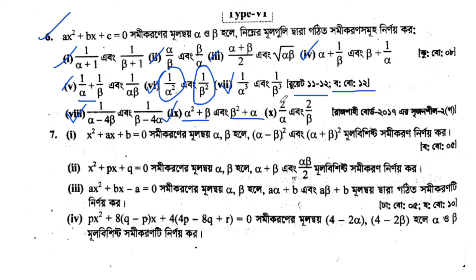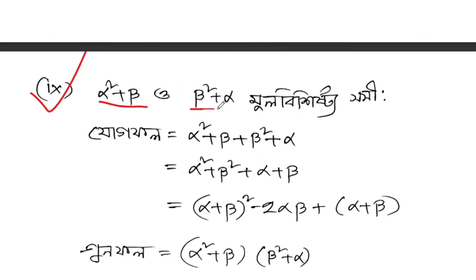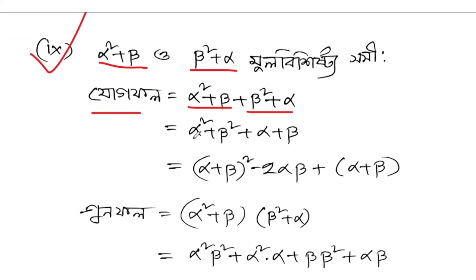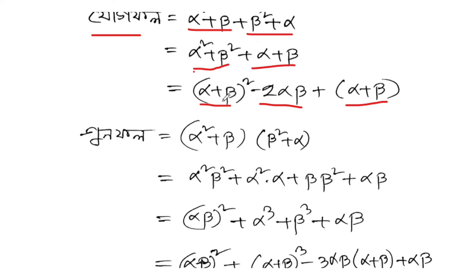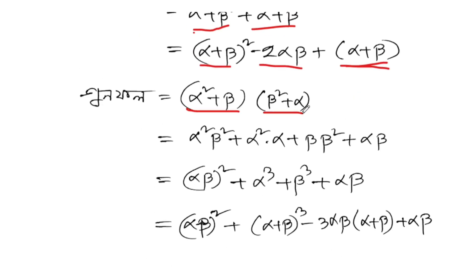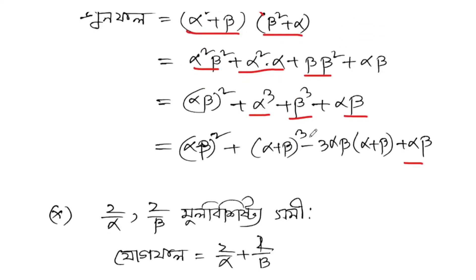The problem: alpha squared beta and beta squared alpha — find the equation. The product is alpha squared beta times beta squared alpha equals alpha cubed beta cubed equals (alpha beta) cubed. The sum is alpha squared beta plus beta squared alpha equals alpha beta (alpha plus beta). Substituting alpha plus beta equals minus b by a and alpha beta equals c by a, we get the sum and product to form the equation.